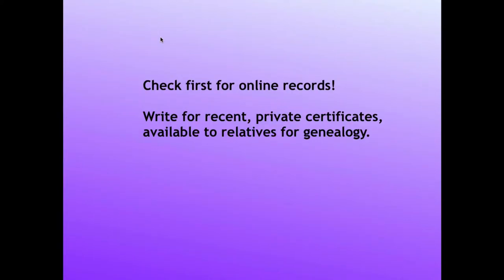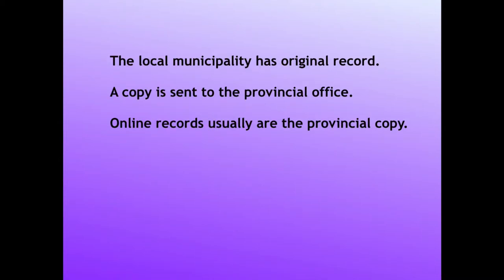In lessons three through five, you learned how to find those certificates online. You'll see that the certificates available online only go up to about 1923, with later certificates being protected for the privacy of the individuals they are about. However, those are usually available to genealogists if you write for them. Certificates typically are held in a local office, and then a copy of the record is sent to a provincial archive. Sometimes a certificate missing from the provincial archives can still be found in the local office.